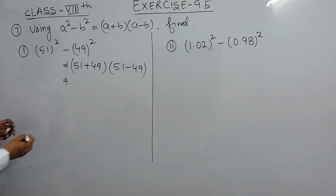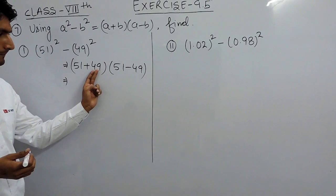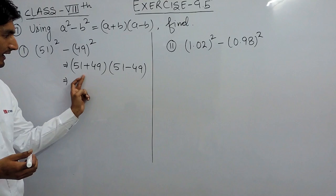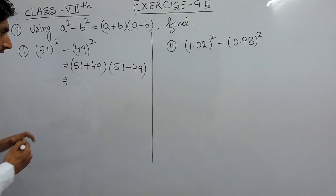Solving this, this is 51 plus 49. If I give this 1 to this, this will become 50 and this is 50 because I have given 1 to this. So, 50 plus 50 is 100.